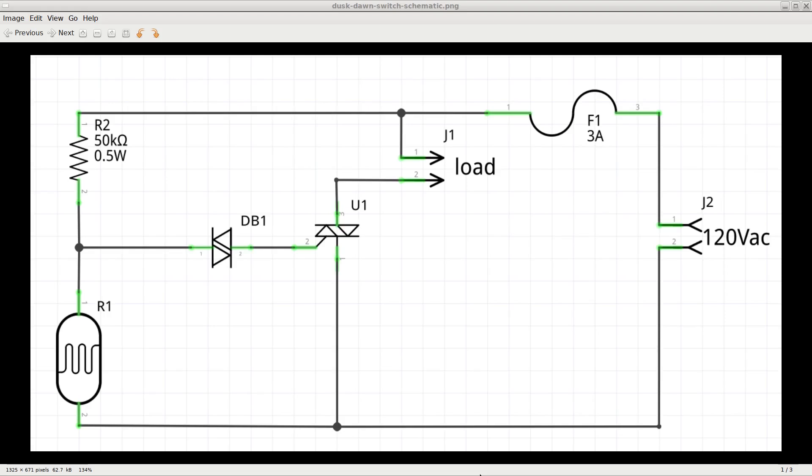Here is the schematic of a typical dusk to dawn automatic switch. It is a very standard design and it requires just five components, not considering the box to put it in, the 120V socket to put on the front panel, and the power cord to plug it in.